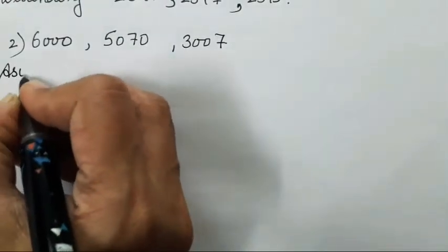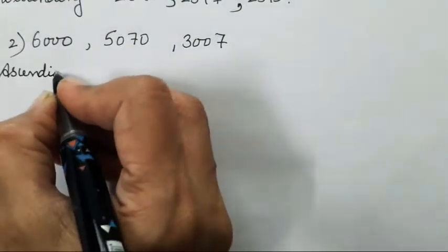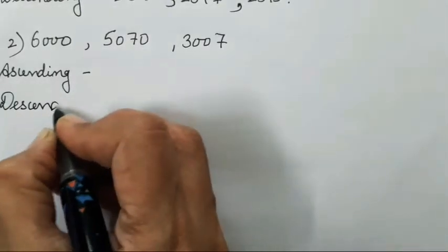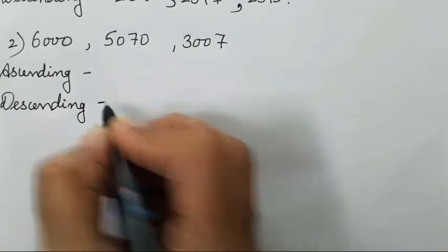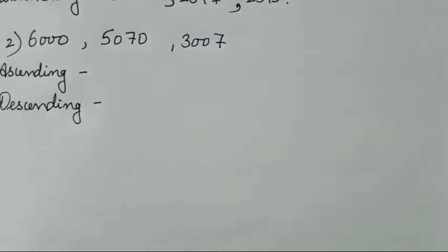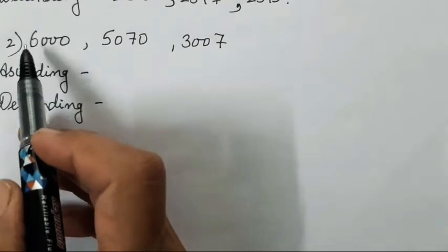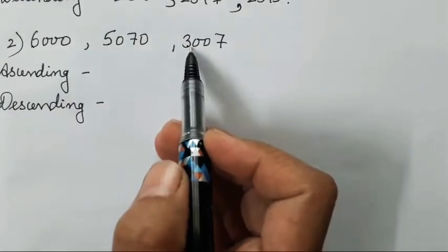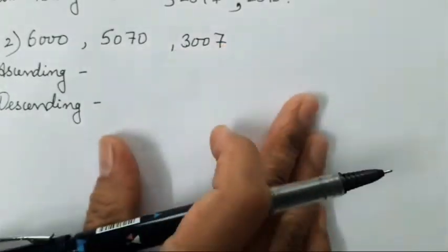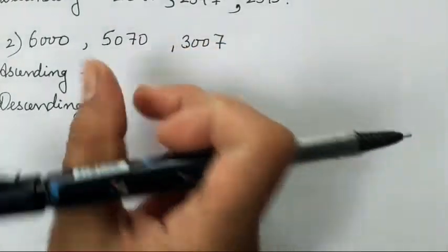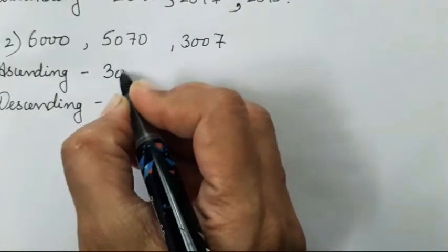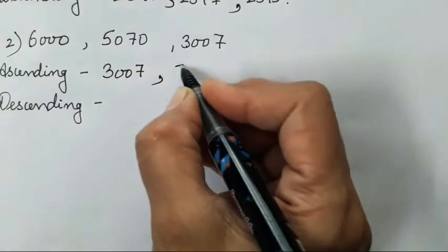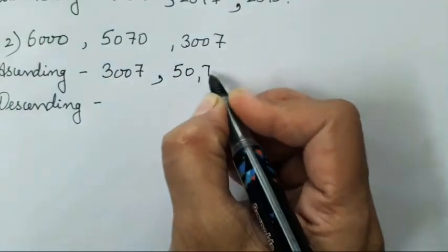So the most important part is you have to be able to read the numbers. If you don't know how to read numbers, then you will find it difficult to write them also. So as I said, first you have to see the first number: 6, 5, 3. So which is going to be smaller? Obviously 3 is going to be smaller. So what you have to do? Take this number first, that is 3007. Then after 3, 5 will come. Isn't it? So no need to check the next number.